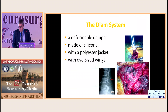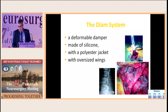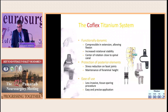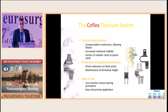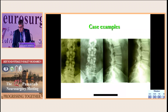The DiAM was very popular, especially in football players. It is in the form of a deformable damper made of silicone with a polyester jacket and oversized wings. The Coflex, which has FDA approval, is better used with posterior micro-decompression. Here are some examples.